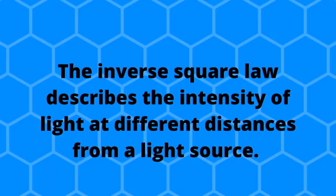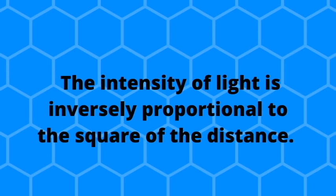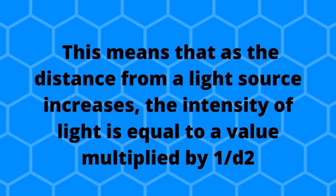There's actually a physics law that describes this, called the Inverse Square Law. The Inverse Square Law describes the intensity of light at different distances from a light source. Every light source is different, but the intensity changes in the same way. The intensity of light is inversely proportional to the square of the distance, meaning it equals a value multiplied by one divided by the distance squared.